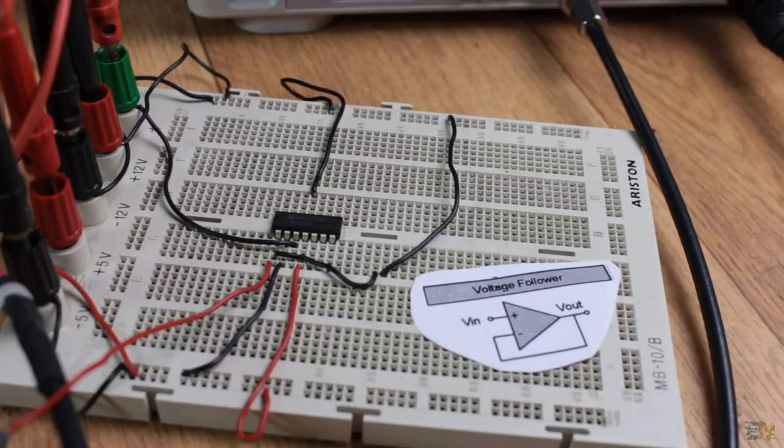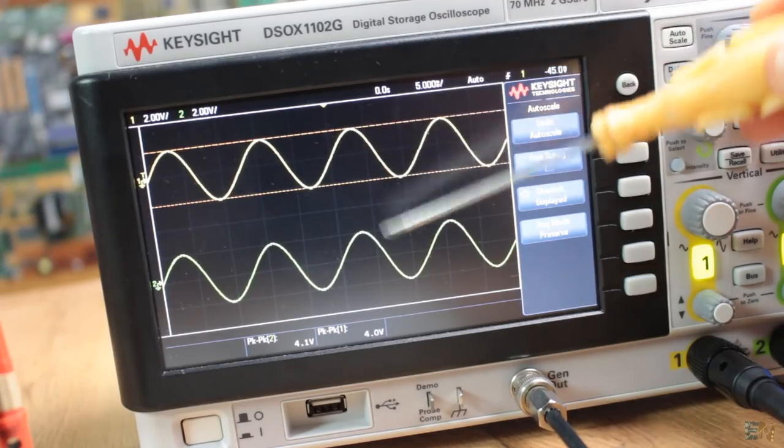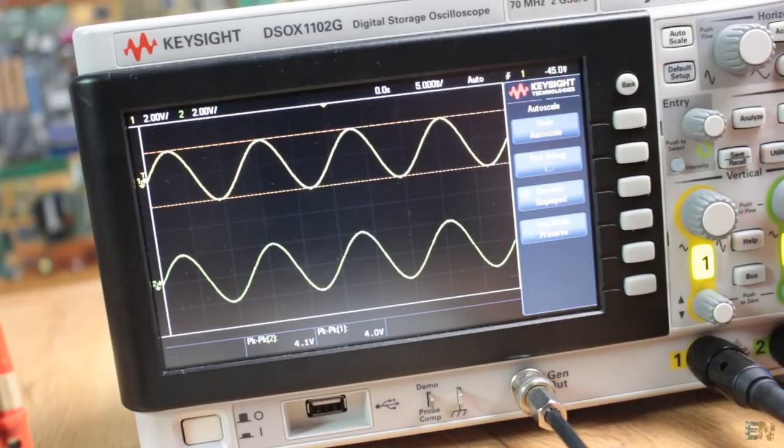I've mounted this configuration on my breadboard and apply a sine wave to it. As you can see, the output is the same as the input and no current is flowing towards the op amp.